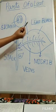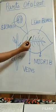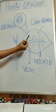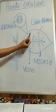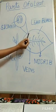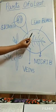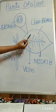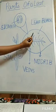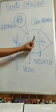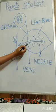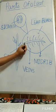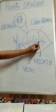Leaf blade is the flat part of the leaf, also known as lamina. The function of lamina is to absorb air, light, and carbon dioxide for the food process. Veins are the tiny tubes across the leaf, and the midrib is the main central vein.